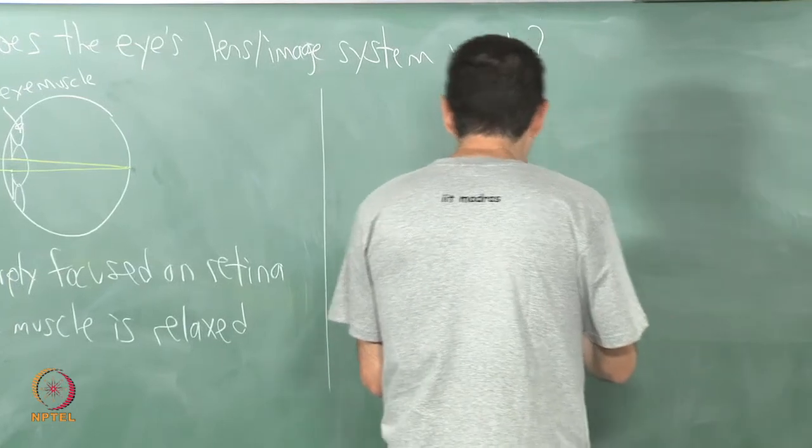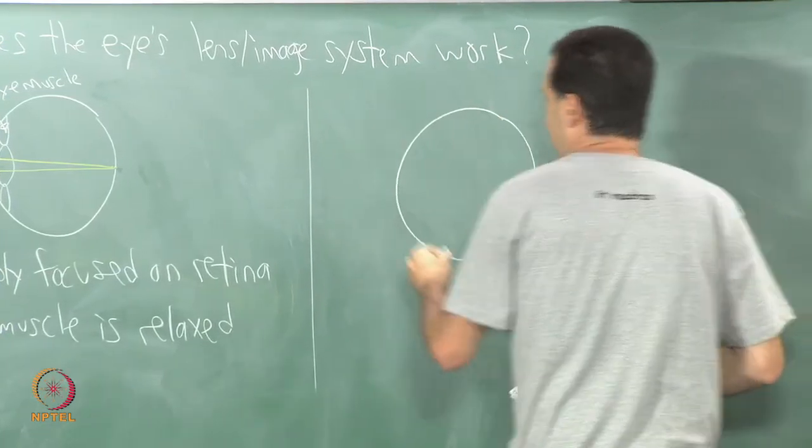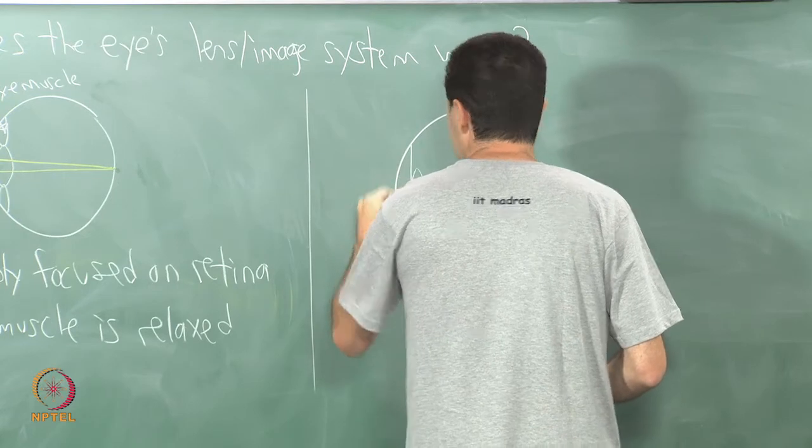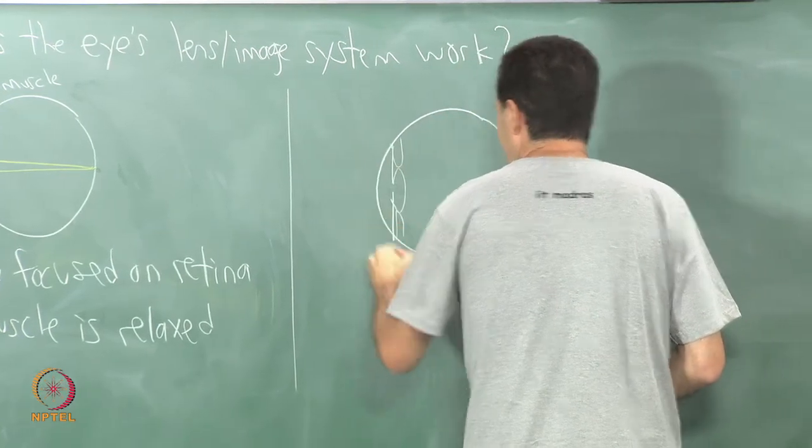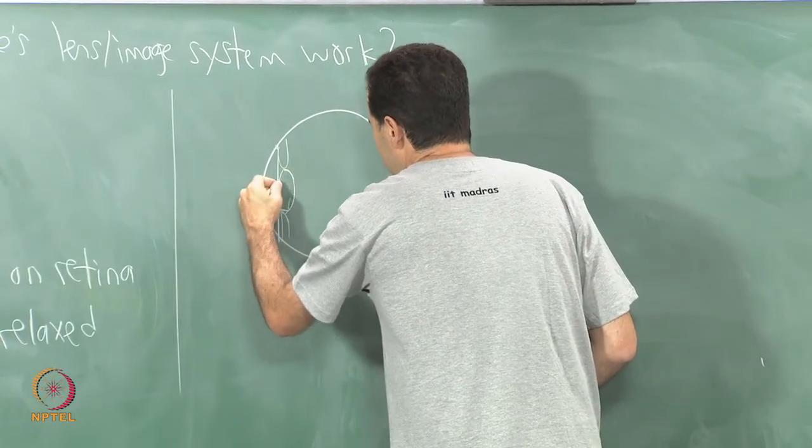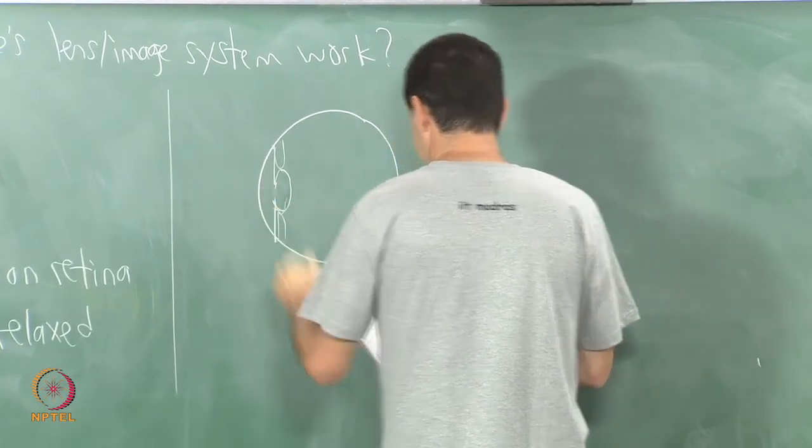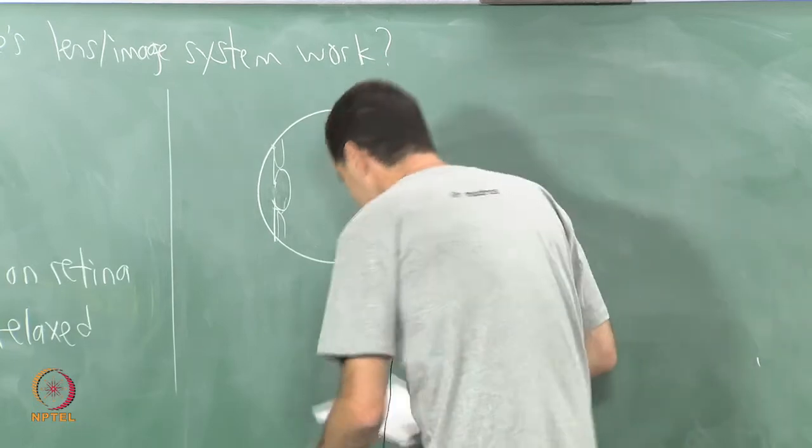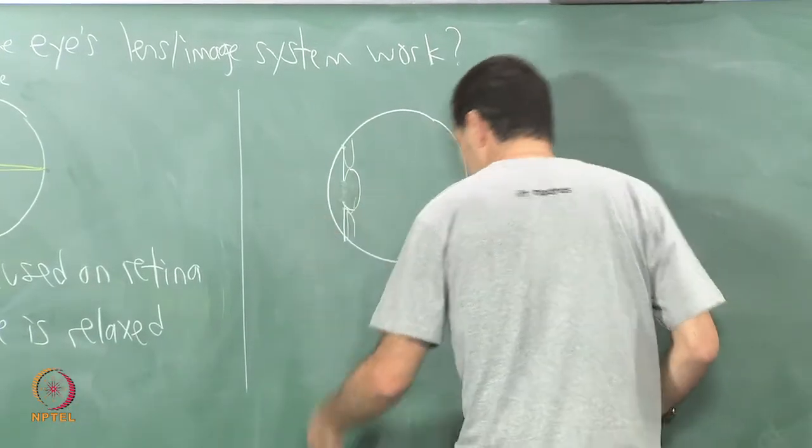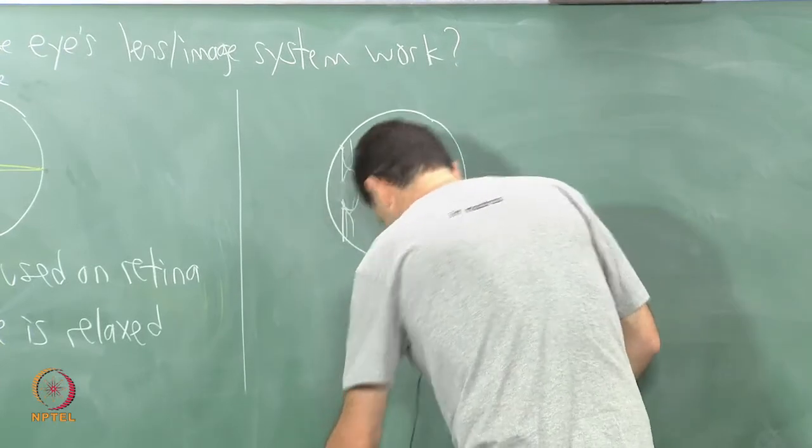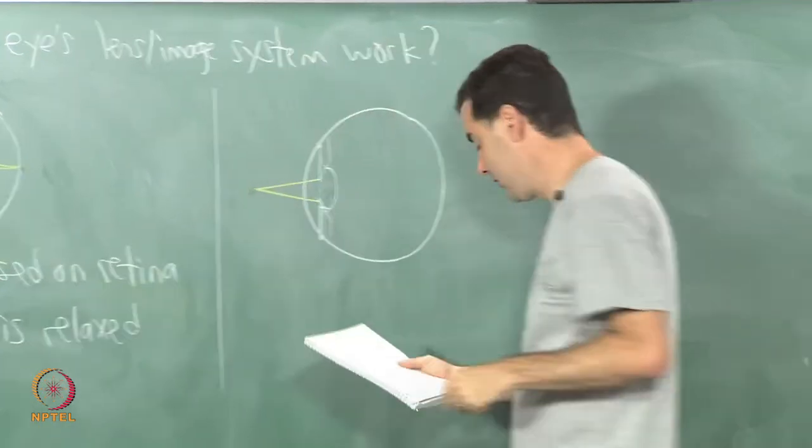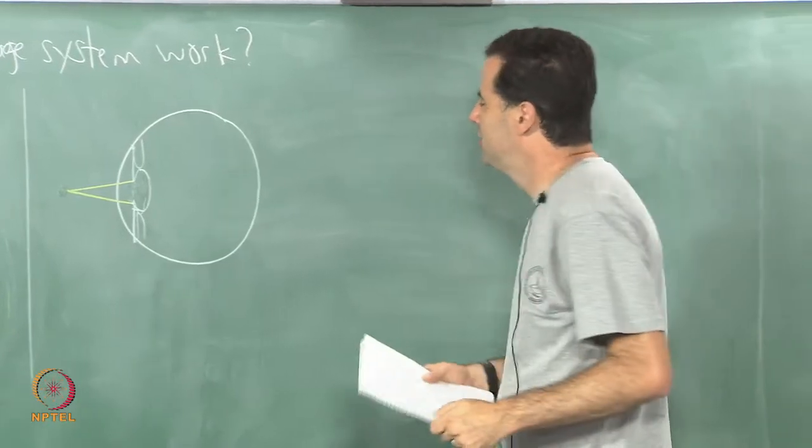Now here's something else that might happen. I'll try to make the same picture with the eye muscle appearing relaxed again. It should look about the same. Now suppose that the rays coming in are not parallel. Something has been placed, the object's been placed a little closer to the eye.